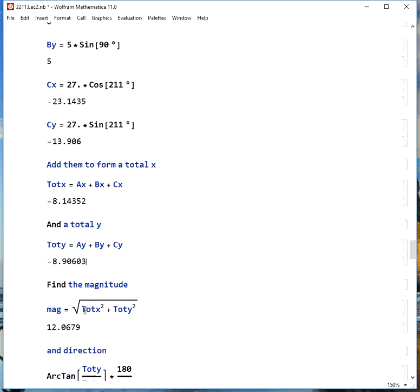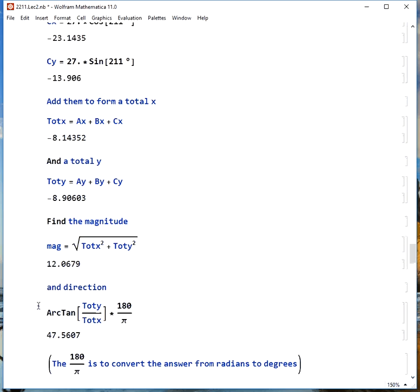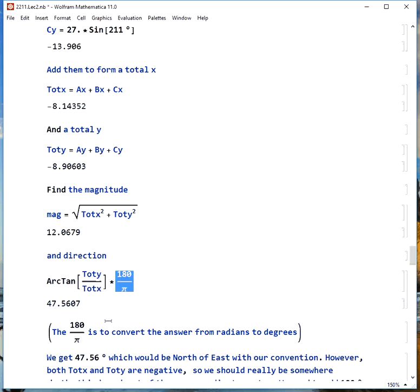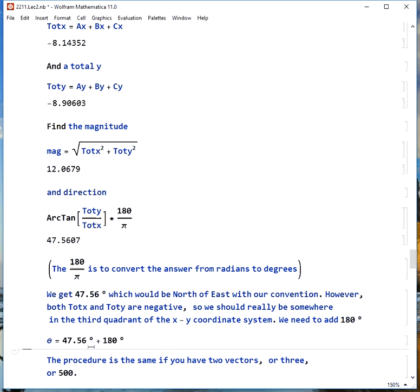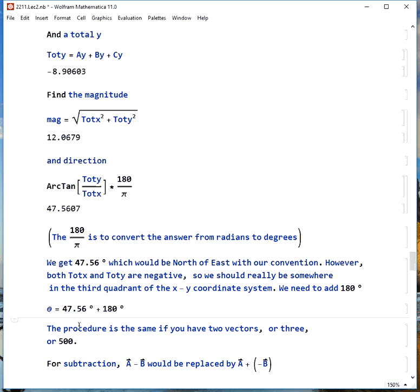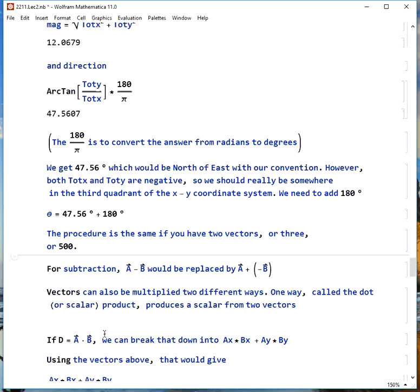Again, our magnitude, we use the Pythagorean theorem, we take the sum of the squares of the components, take the square root, we get 12.07 meters per second. And the direction, we take the arc tangent of Y over X, we get 47.56 degrees. This 180 over pi is in here because this program, Mathematica, uses radians instead of degrees. Now the 47.56 degrees, this is an example of something that's wrong if we leave it like this because notice total X and total Y are both negative. We're really somewhere on the south side of west. So we're in the third quadrant, we have to add 180, and we get, this time, 227.6 degrees. We'd go through this same procedure whether you have two vectors or three or 500. It just is more tedious, but it's the same idea.